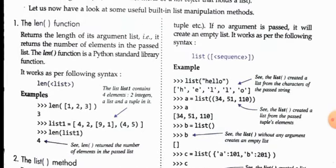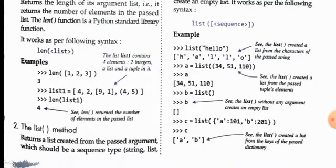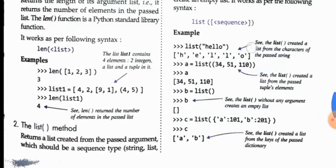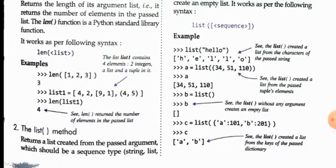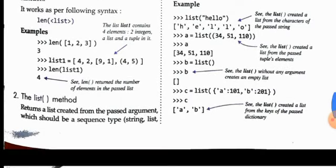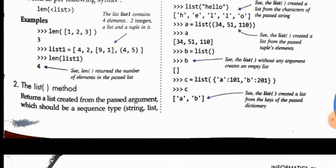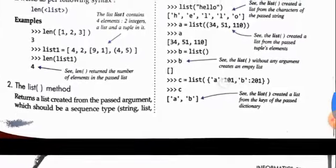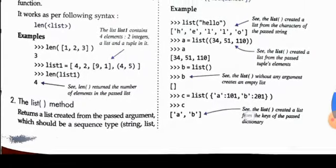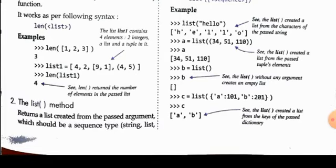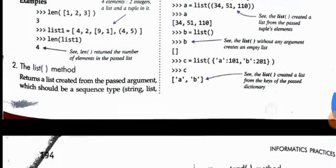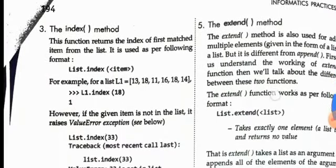The list() method can be used for creating a list. For example, list('hello') treats each character of 'hello' as a separate element. Also, if you write c = list({'a': 101, 'b': 201}), it creates a list from a dictionary and stores only the keys — a and b — not the values 101 and 201.